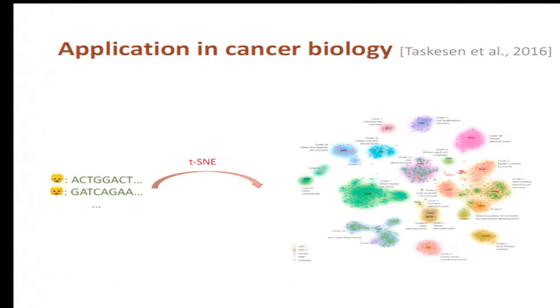I'll show you a very nice application in cancer biology. In this study by Taskesen et al., they applied this t-SNE algorithm on some genomic data of a group of cancer patients. And as we can see in the 2D visualization, there are apparently different clusters among these patients, and these clusters correspond to different cancer subtypes.